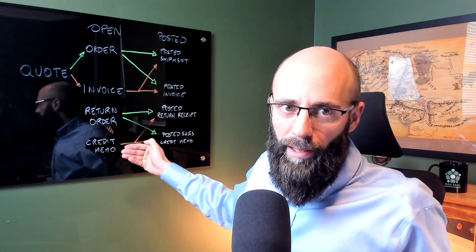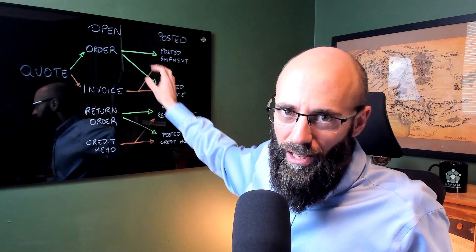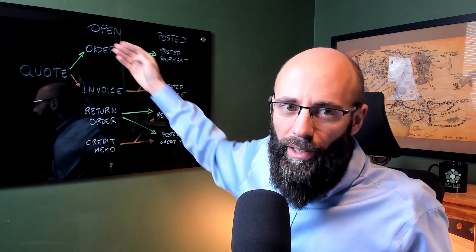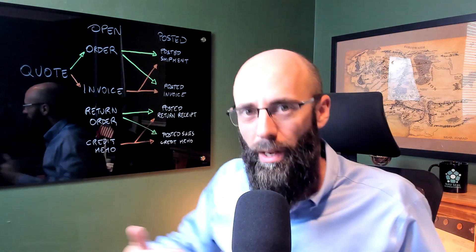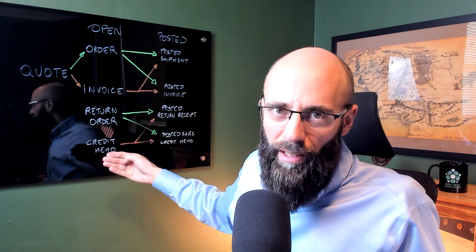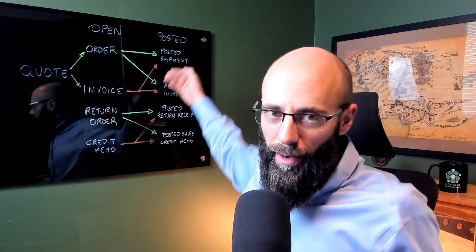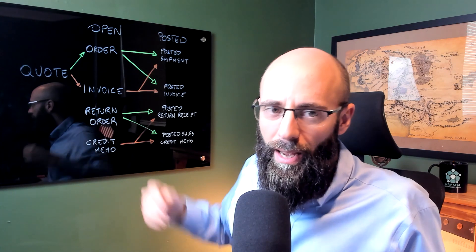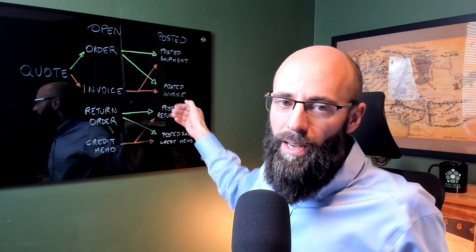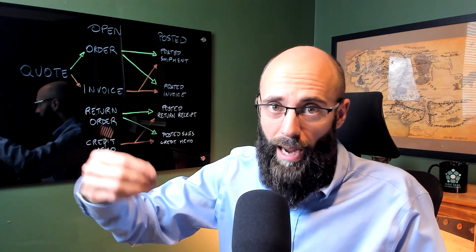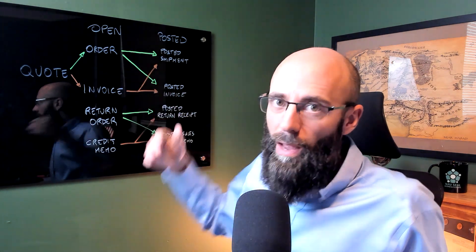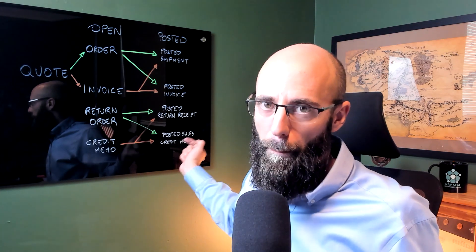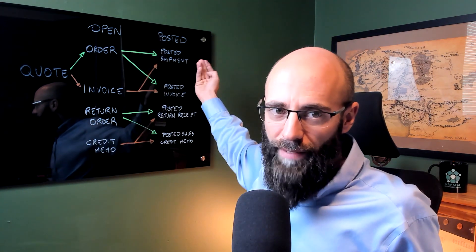You can clearly see that there is a parallel between these two sides as far as action goes. The equivalent of the order is the return order when we are receiving something back from the customer. For the invoice, the equivalent is the credit memo. On the posted side, when sending something out we have the posted shipment; when receiving back we have the posted return receipt. For invoices registered in the system, same thing — posting a sales credit memo gives the customer credit for goods they no longer want.